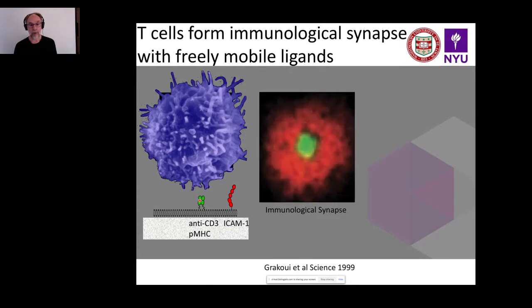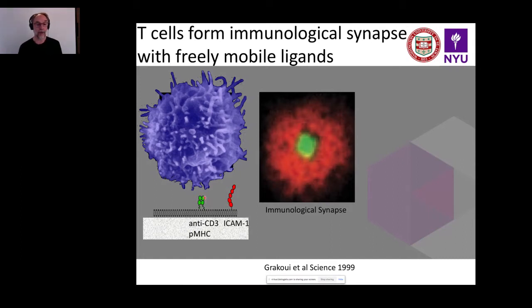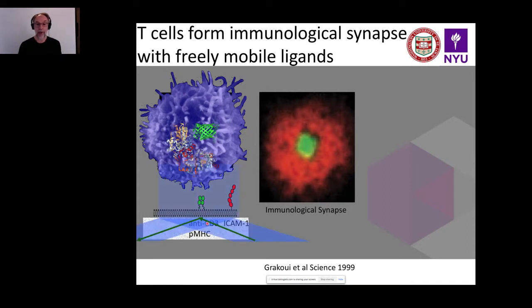When you put a live T-cell on this substrate it forms the immunological synapse very similarly to what was originally observed, but now the T-cell does this essentially autonomously using a laterally mobile presentation of ICAM-1 and anti-CD3. This ability to reconstitute the process in an optically accessible system on a glass coverslip — amenable to TIRF microscopy — allowed a lot of progress in understanding the signaling mechanisms involved in forming these structures and how they relate to the T-cell response to antigens.